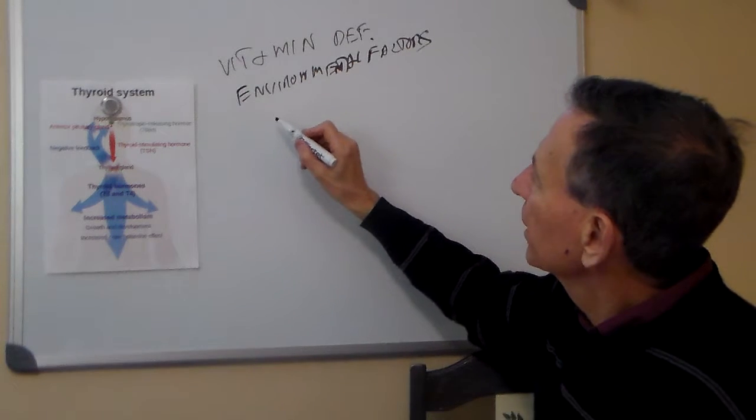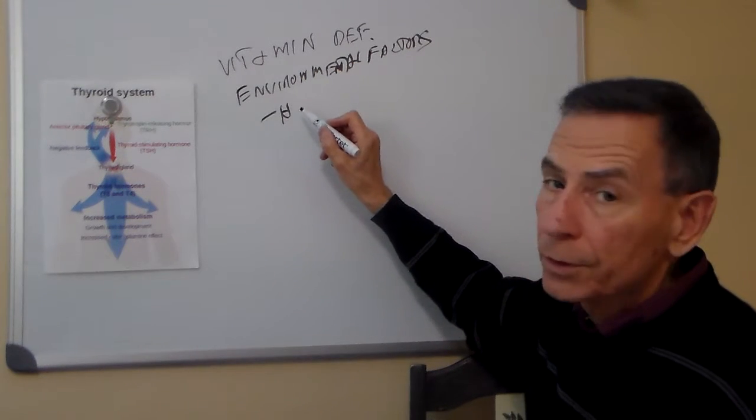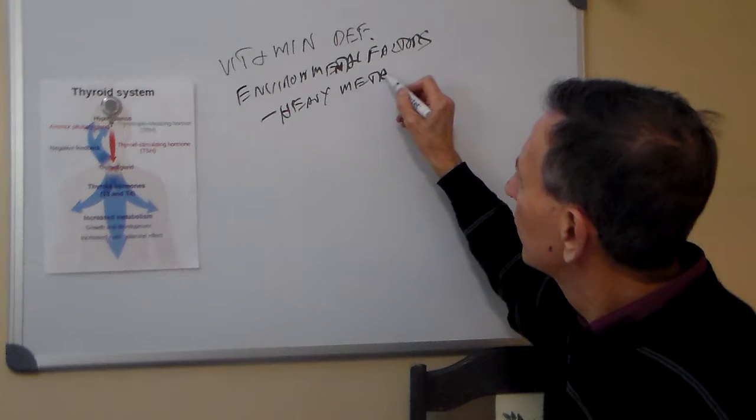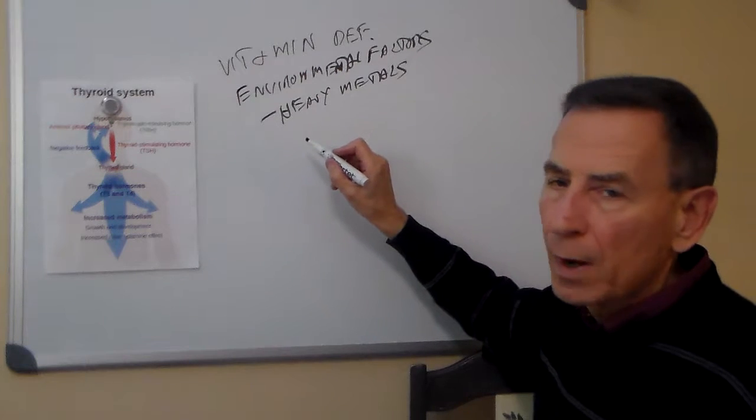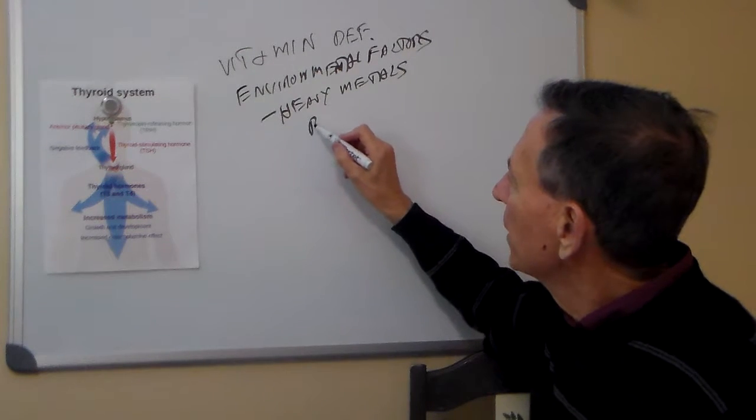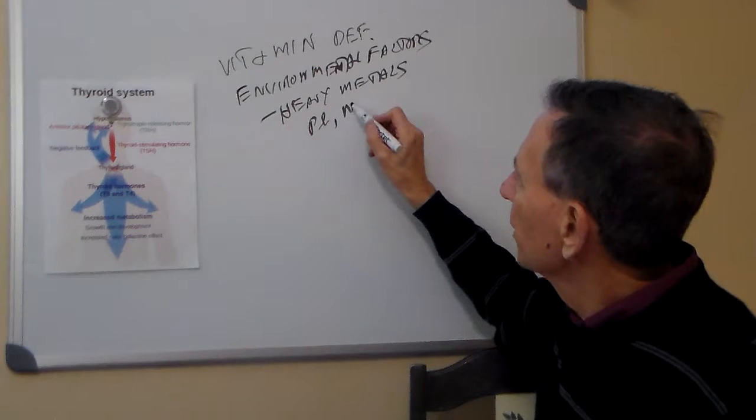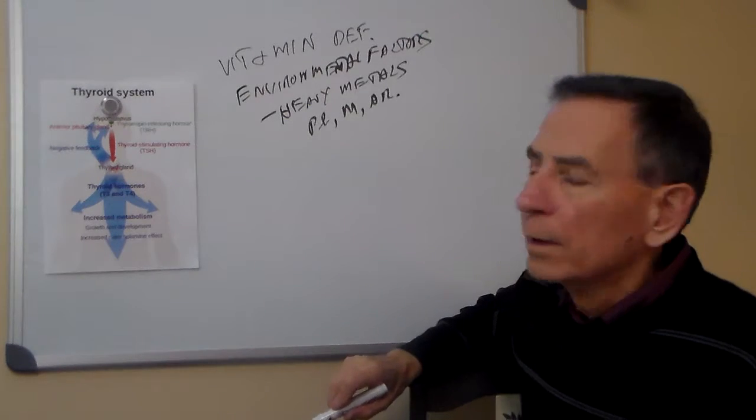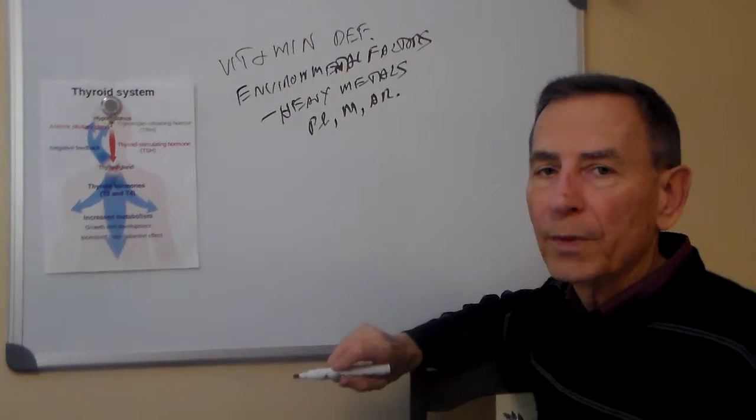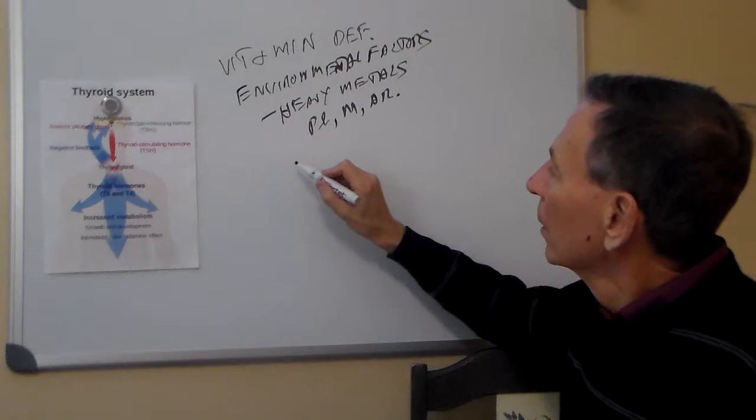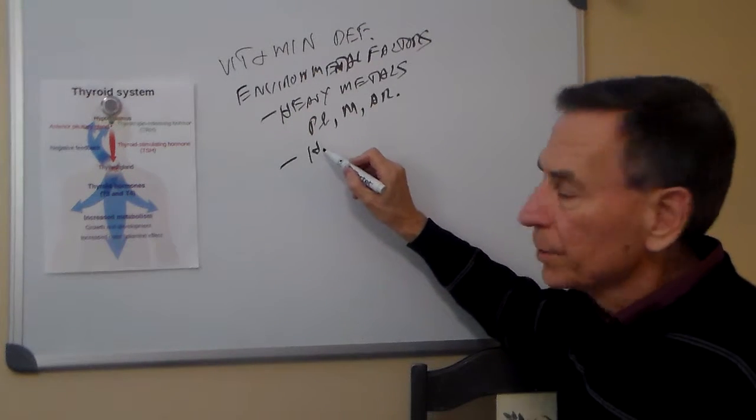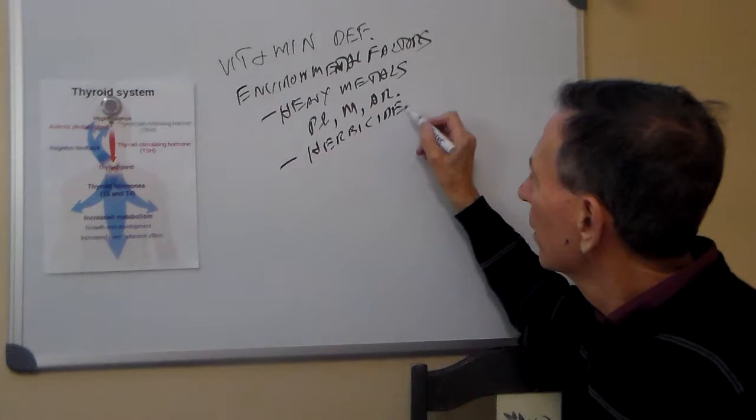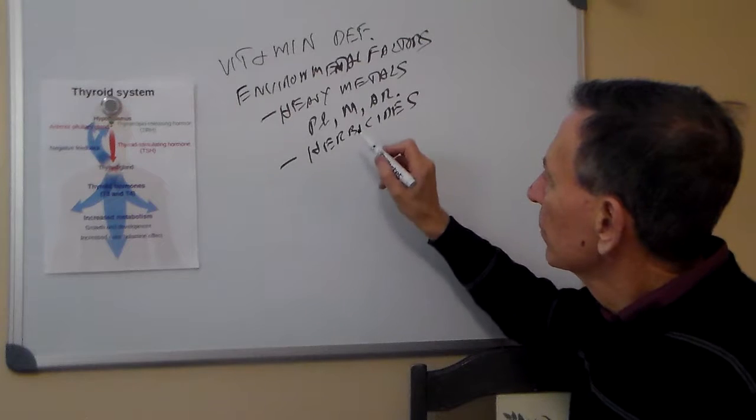So these include things like heavy metals. Some of the most prominent are lead. We also have mercury. And we have arsenic. That really don't help the thyroid to work well at all. We can also have herbicides and pesticides.